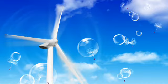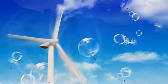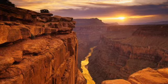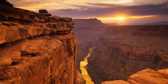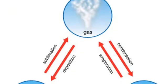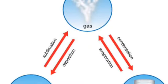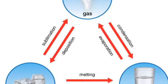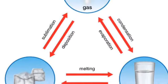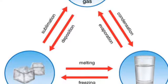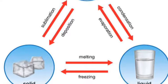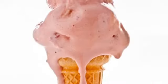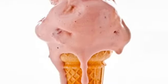Now, gases spread out to fill any container they are in, even really big spaces. Now, matter can change. When matter changes its form, it's usually called changing its state, such as changing the state of matter. Changes in temperature are usually what causes matter to change its state.